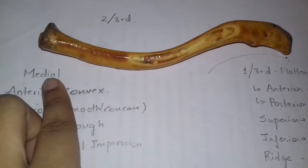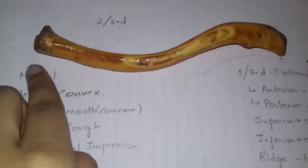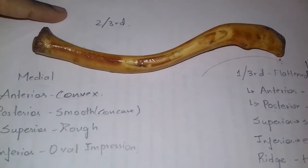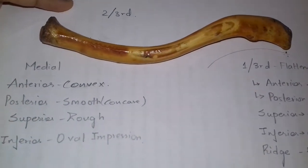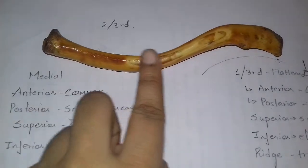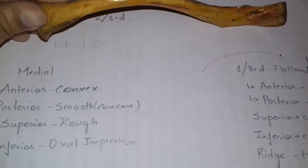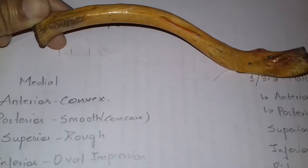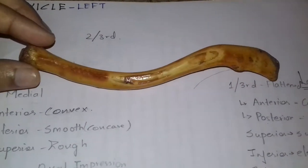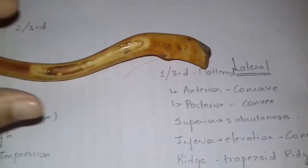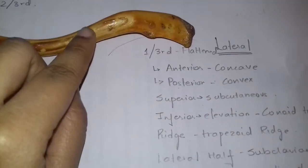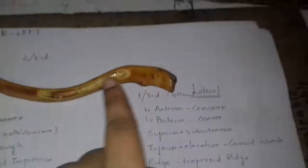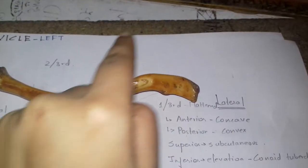On the medial side, the anterior surface is convex and the posterior surface is smooth and concave. The superior region is rough, and there is an oval impression on the inferior region. On the lateral side, the anterior surface should be concave and the posterior surface should be convex.